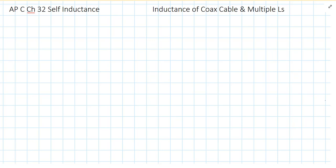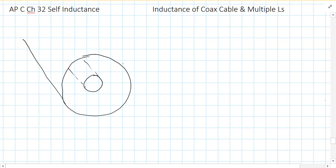So imagine a coax cable that looks like this and I'll try to draw the best I can. So it's got an inner wire and then it's got an outer sheath like so. Here is the inner wire going off and then here is the outer sheath going off, so they're concentric cylinders like so.